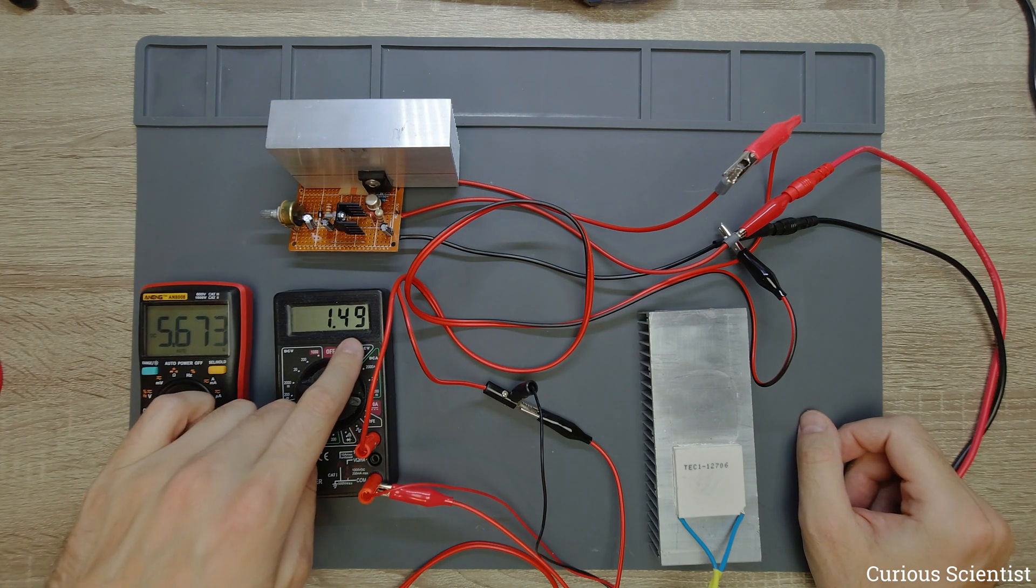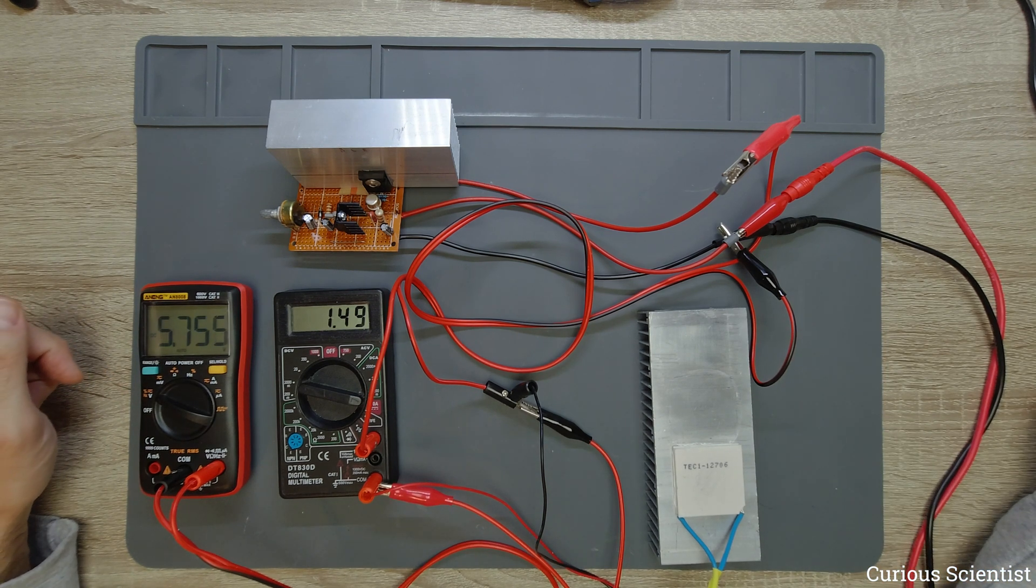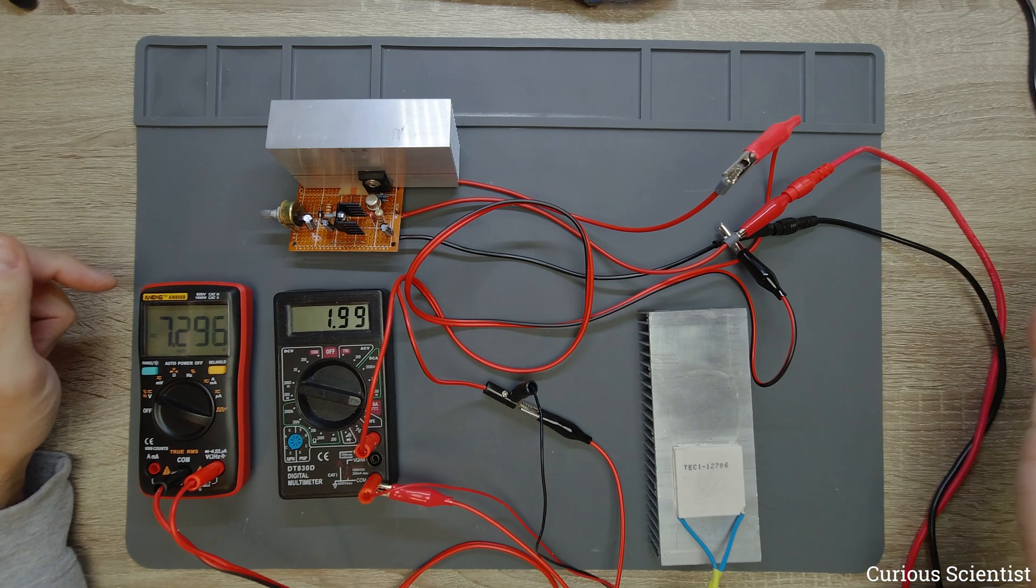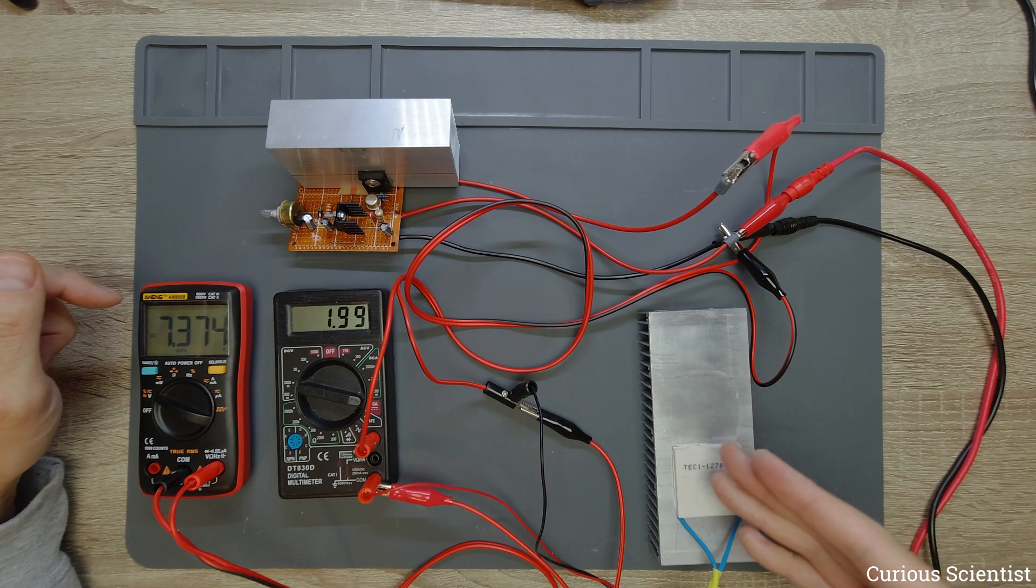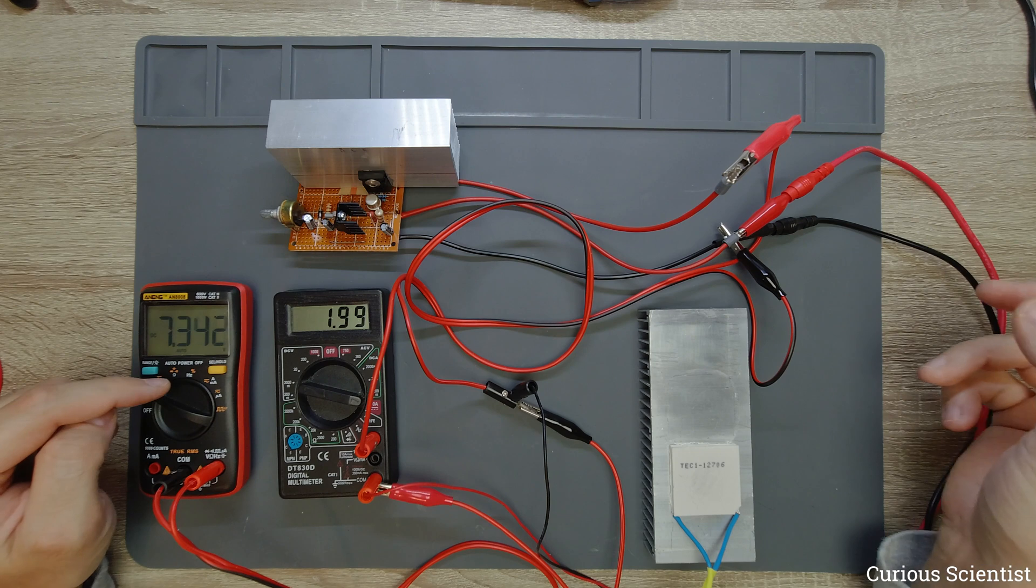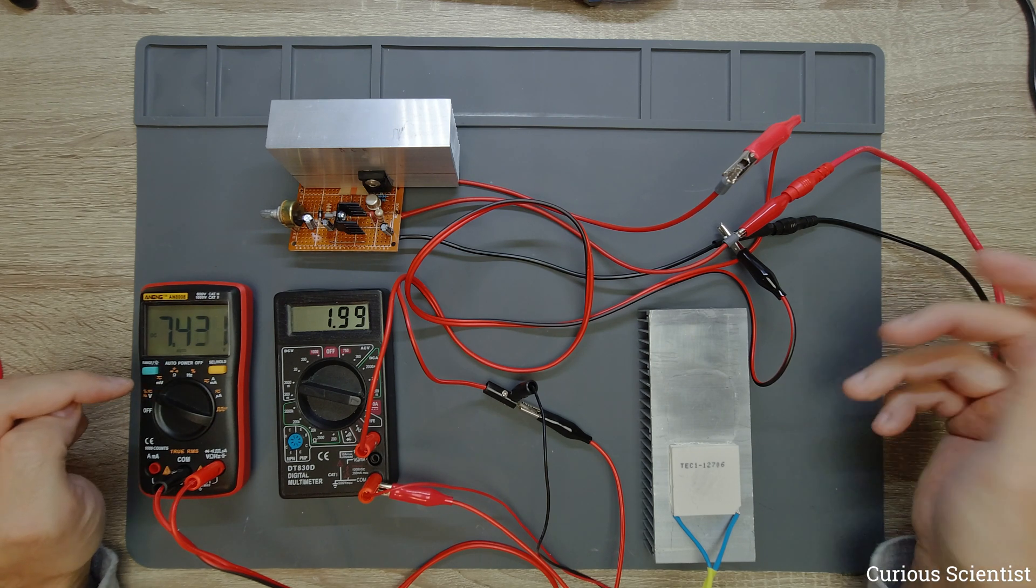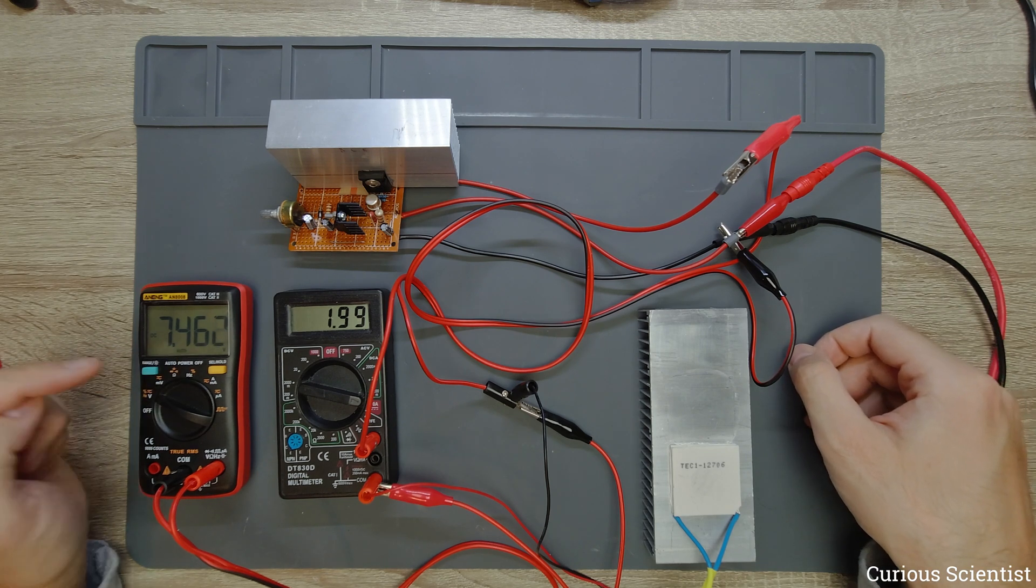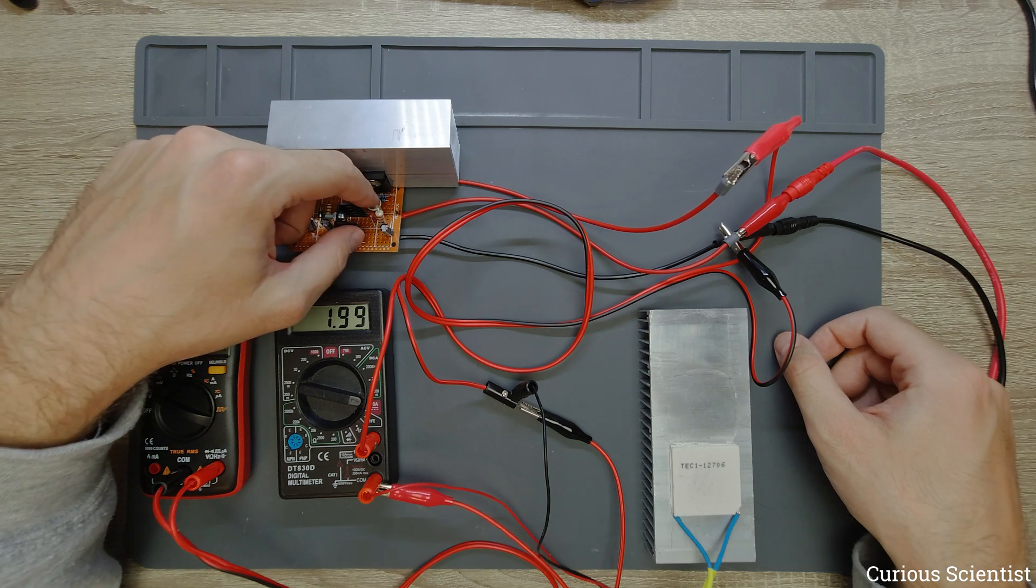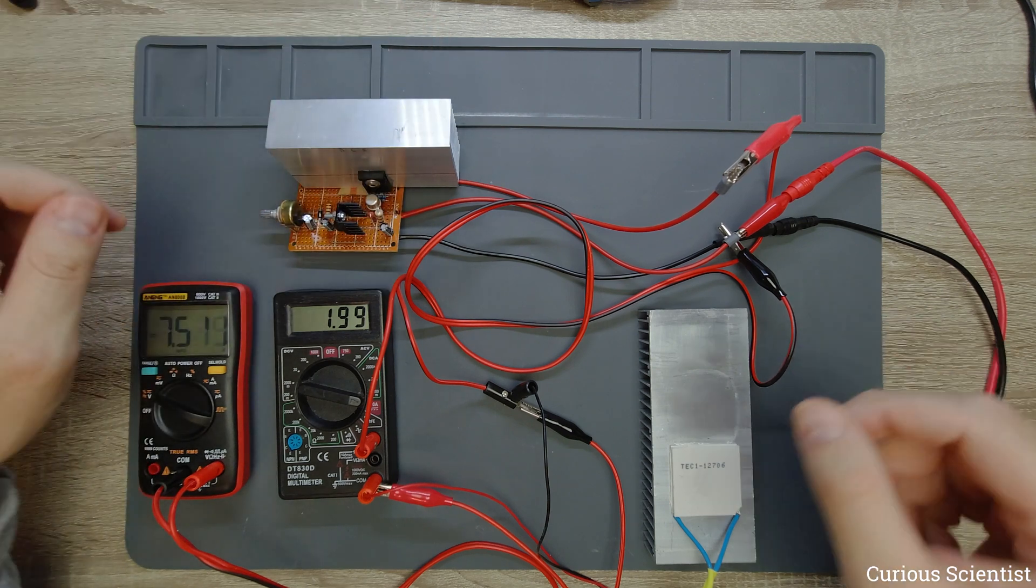Now you can see we are at 1.5 amps and 5.7 volts so let's increase the current to 2 amps. So now we are at 2 amps with the power supply and then 2 amps is going through the load as well. But the voltage of the power supply is 14.3, it's basically the half of it so 7.4 and if I touch these things they are still room temperature.